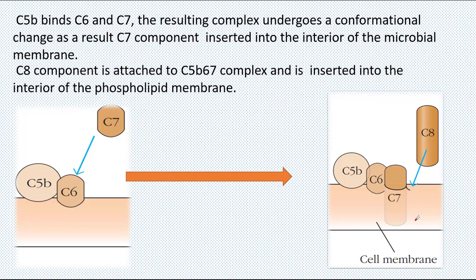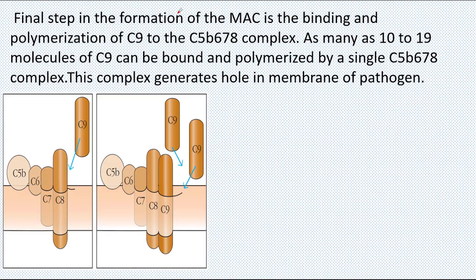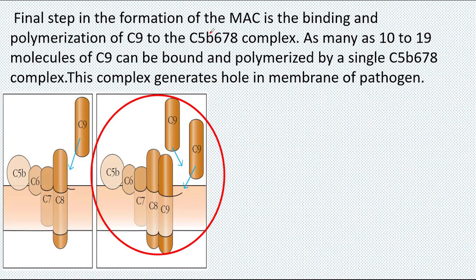The C5b-C6-C7-C8 complex can create holes in the pathogen surface up to 10 angstroms in diameter. However, this complex is unable to create pores in gram-negative bacteria and certain viruses. So the final step in the formation of the membrane attack complex is the binding and polymerization of C9 to the C5b-C6-C7-C8 complex.